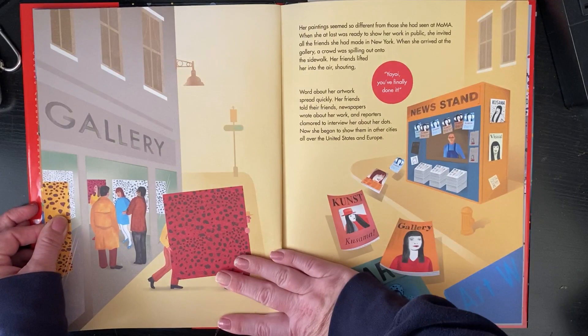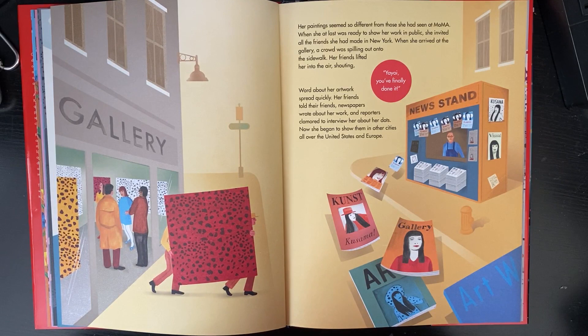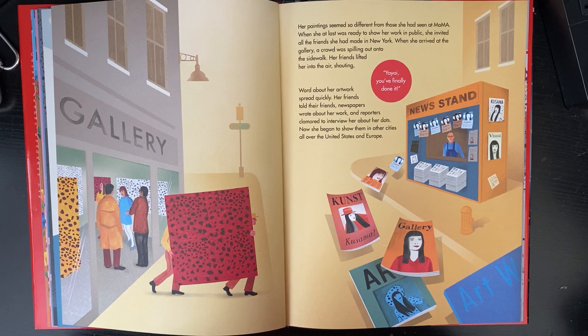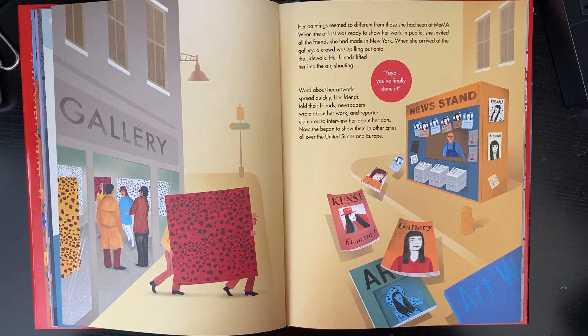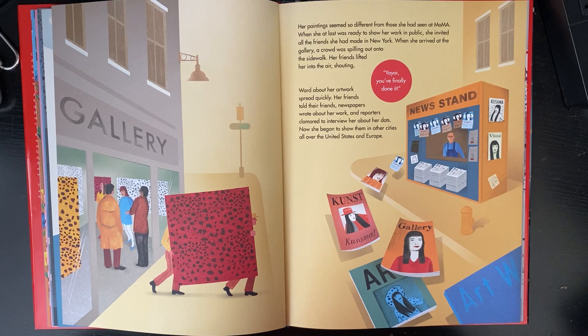Her paintings seemed so different from those she had seen at MoMA. When she was ready to show her work in public, she invited all the friends she had made in New York. When she arrived at the gallery, a crowd was spilling out onto the sidewalk. Her friends lifted her into the air, shouting "Yayoi, you've finally done it!" Word about her artwork spread quickly. Her friends told their friends, newspapers wrote about her, and reporters clamored to interview her. Now she began to show her dots in other cities all over the United States and Europe.